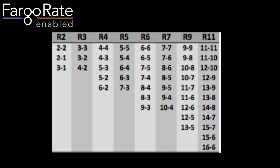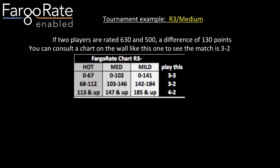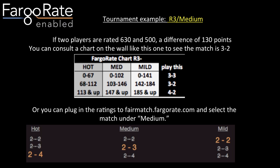Here's what several of the match charts look like — you can see chart R5 in the middle. When you specify a tournament, you might use chart R5 all the way through on both sides of a double elimination, or you might choose R5 on the A side and R4 on the one-loss side. Specifying a tournament means specifying a chart — say R3 — and a handicap level: hot, medium, or mild. For a tournament using chart R3 and medium handicaps, with two players rated 630 and 500 (a difference of 130 points), you consult the medium column on a wall chart or plug those ratings into fairmatch.fargorate.com, select chart R3, and see it's a 3-to-2 matchup.